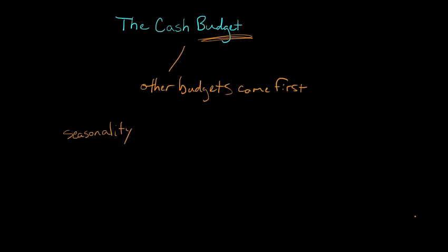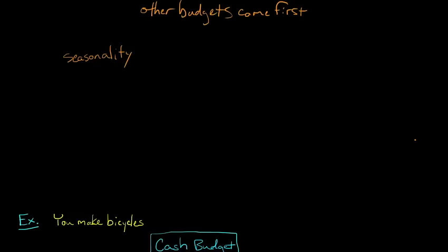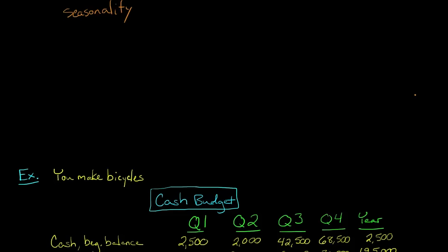Let's walk through an example that has to do with seasonality. We'll use the example from previous budget videos — a firm that makes bicycles. You might imagine that a firm that makes bicycles might sell more bicycles in the summer months than in the winter when there's snow on the ground. So we've got this kind of seasonality issue, and we can look at how our cash is going to flow throughout the firm during the year.